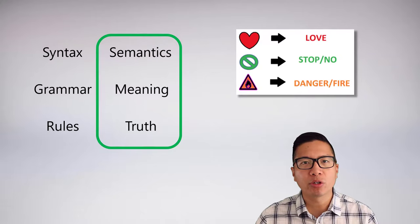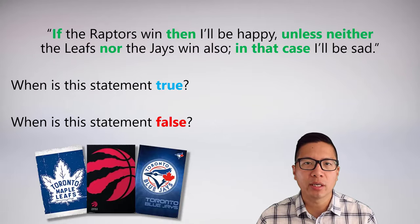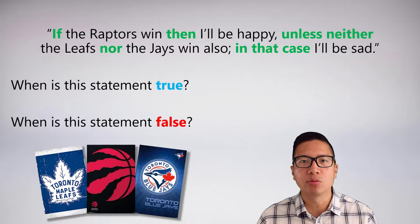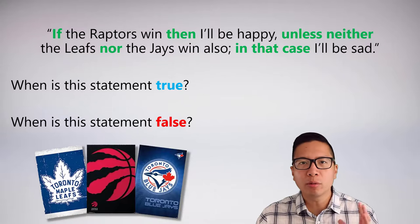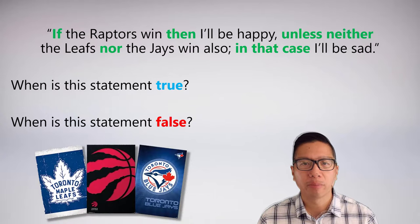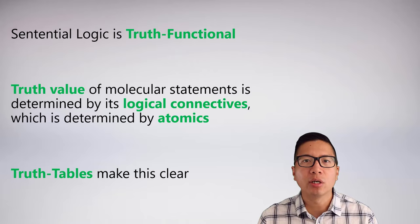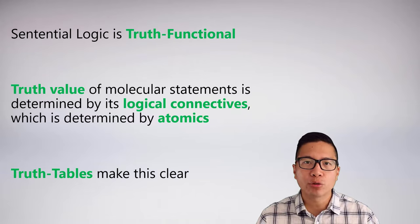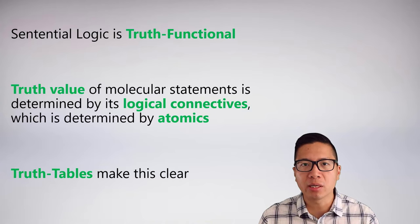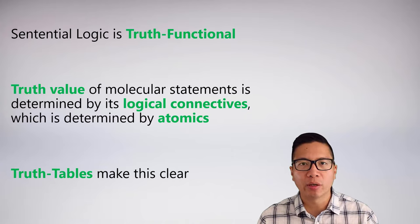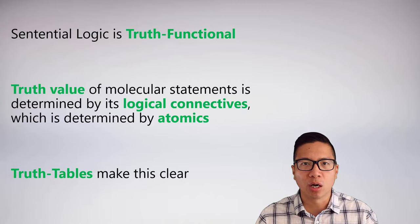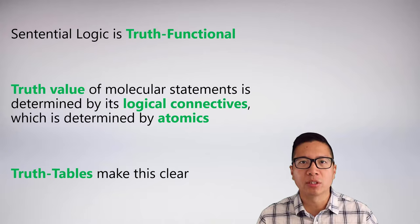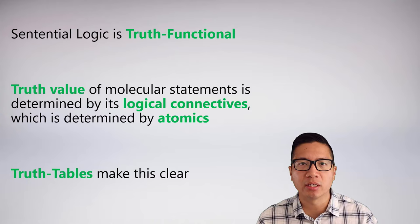Remember, this is the question we started our unit 2 with: how do I take a complicated sentence and figure out what conditions would make it true and what conditions would make it false? In order to do that we need to know a bit more about how truth works in sentential logic. Sentential logic has a really nice feature in that it is truth functional. The truth value of a large molecular statement essentially boils down to the truth values of the atomics, and the logical connectives alter those truth values into the truth value of the overall statement.